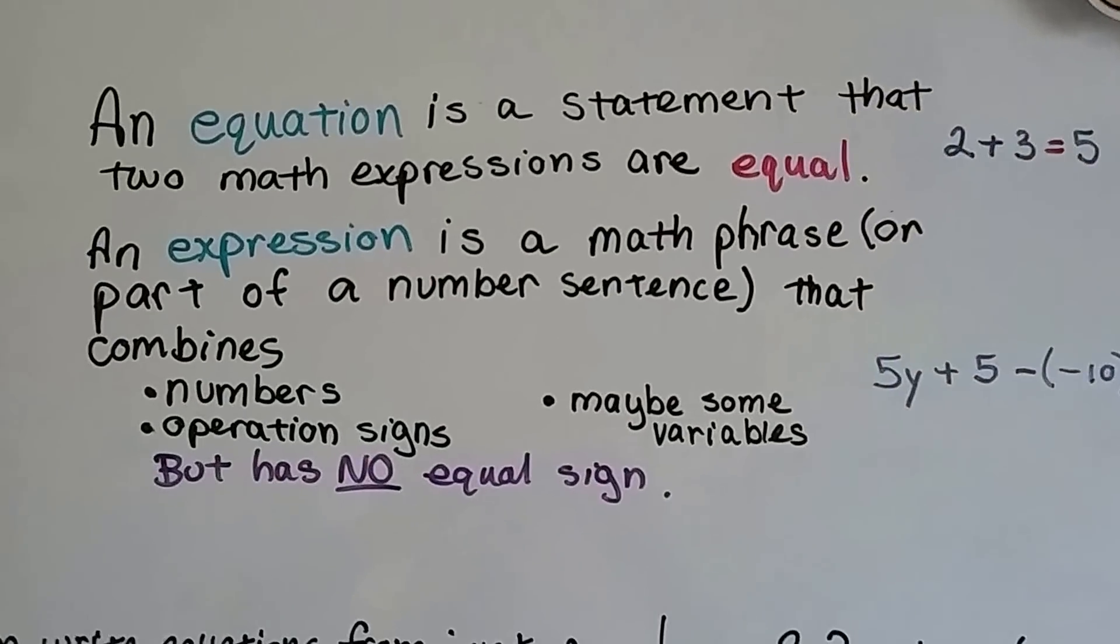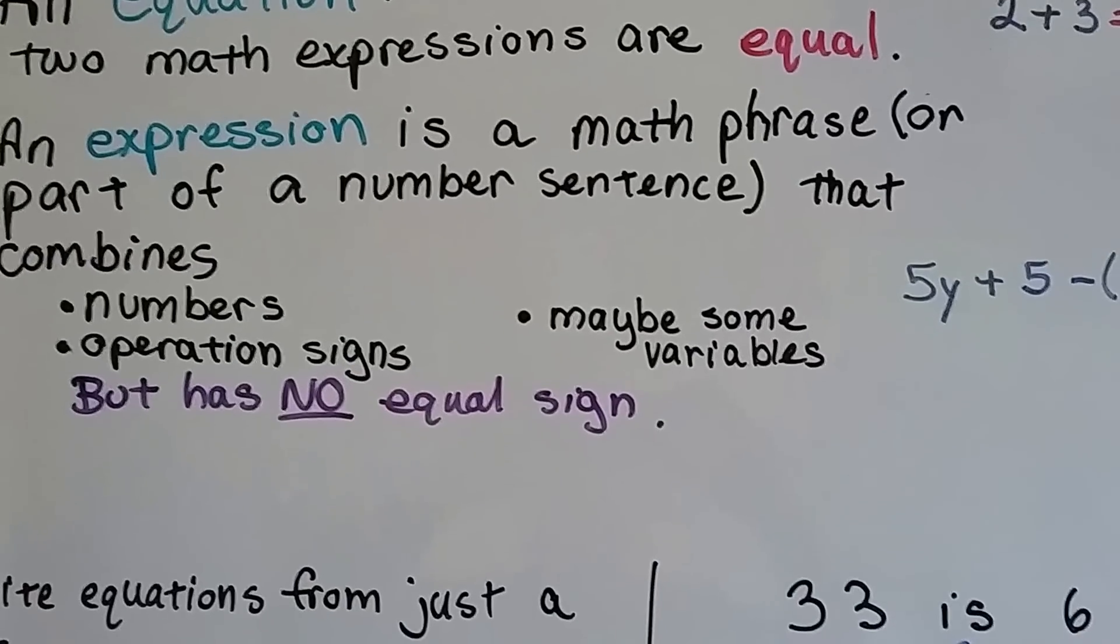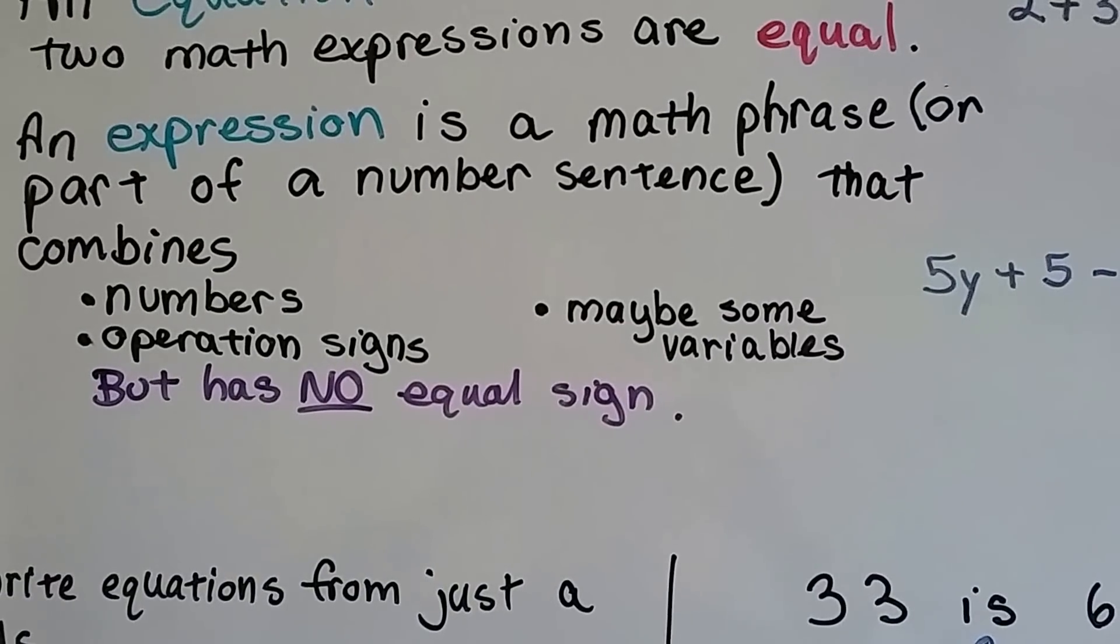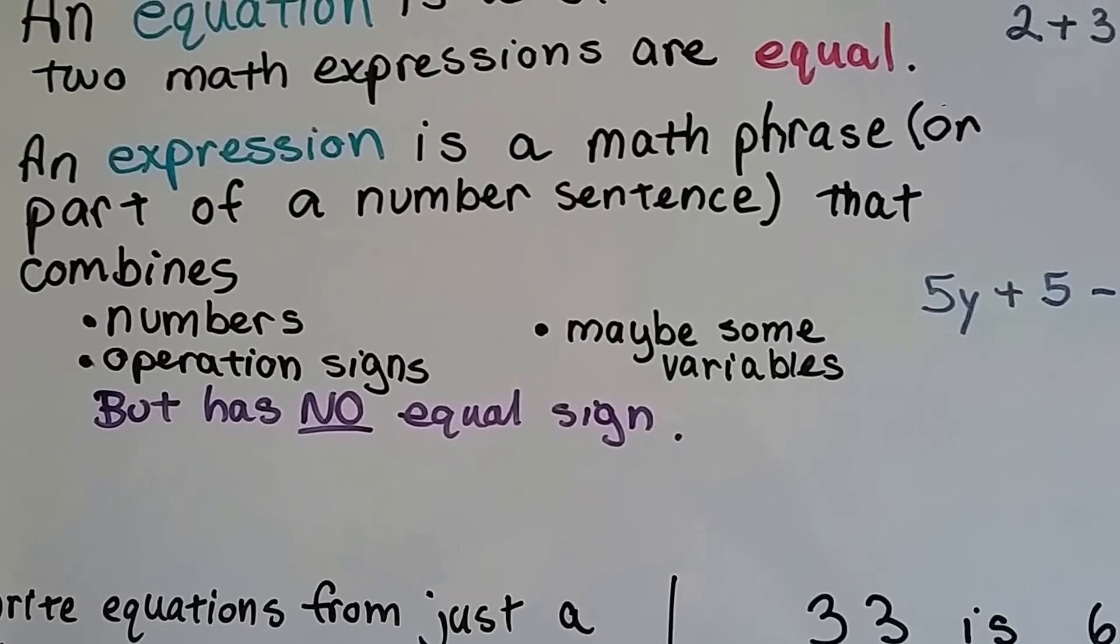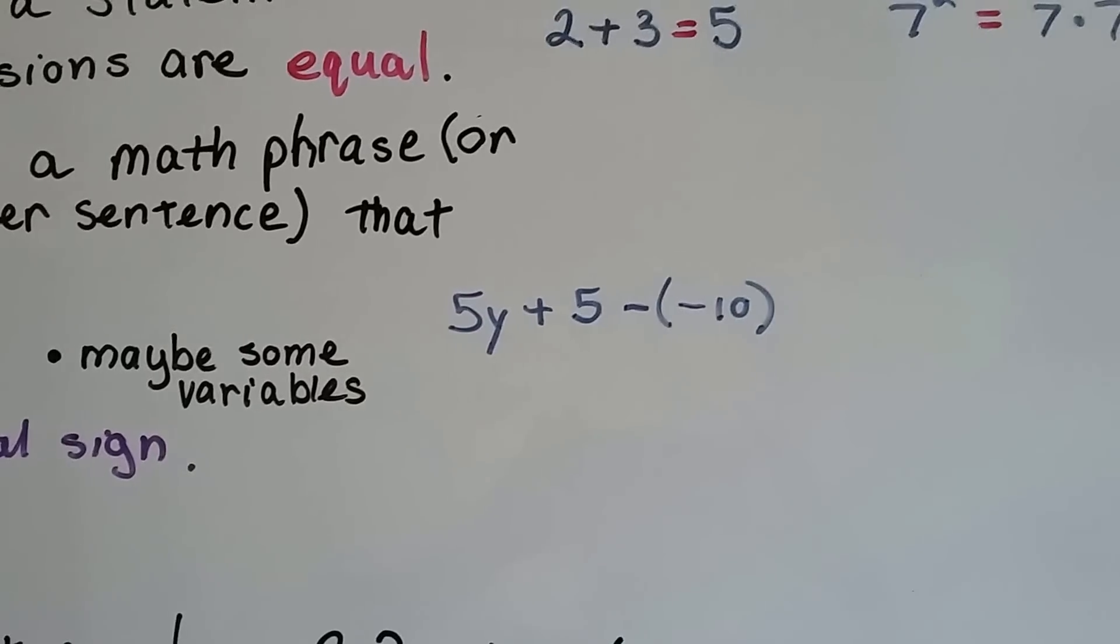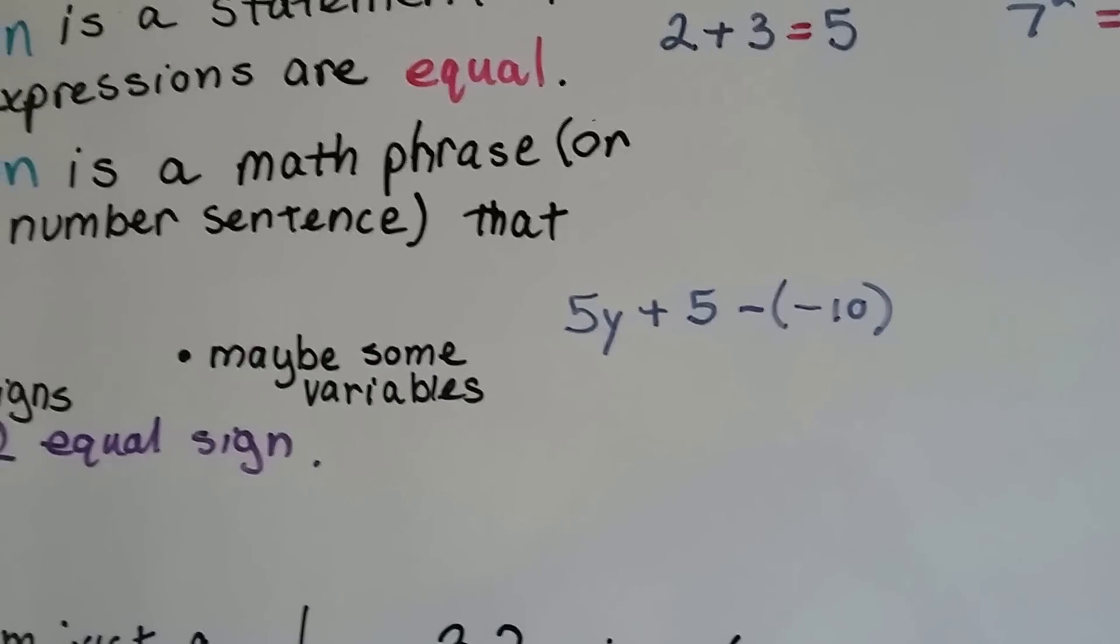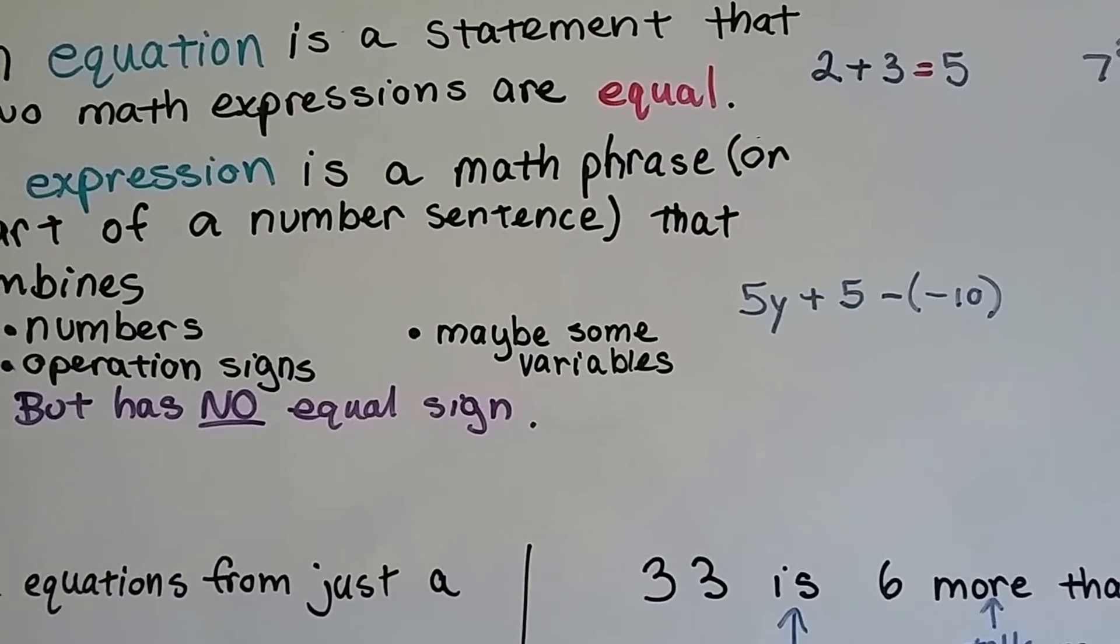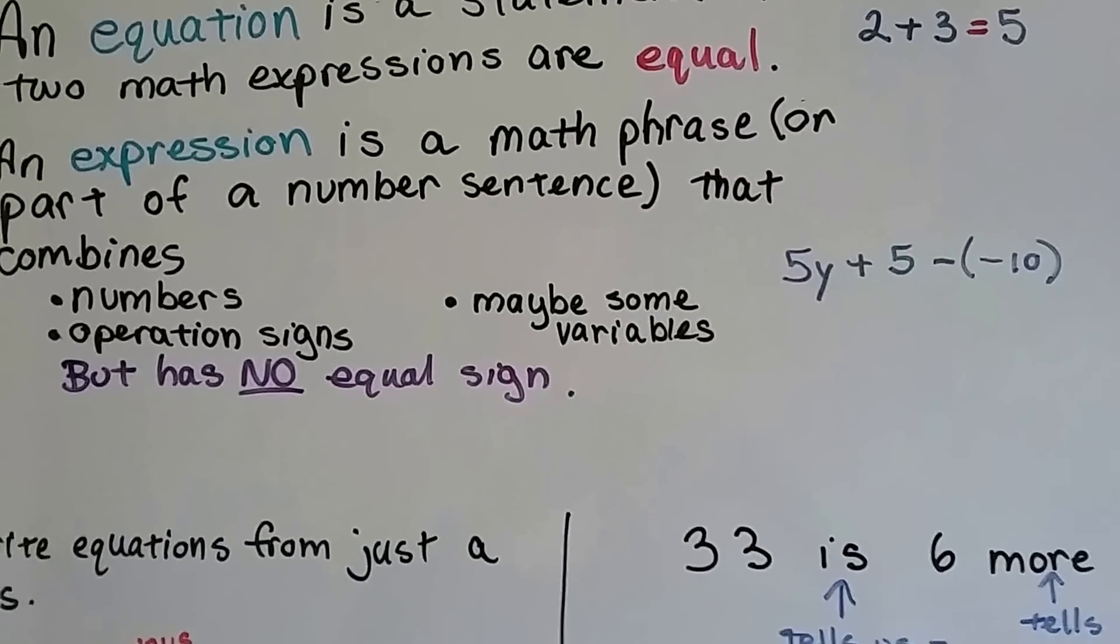Where an expression is a math phrase or part of a number sentence that combines numbers, operation signs, maybe some variables, but it has no equal sign. So 5y plus 5 minus negative 10 would be an expression. We can't solve it. We might be able to simplify it. We don't know what y is. There's no equal sign.